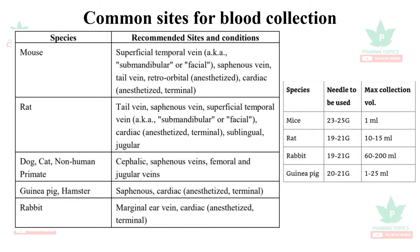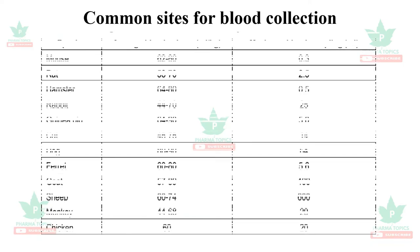You can see the needle size and maximum volume that can be collected by species. For mice, the bore size is 23 to 25 gauge and a maximum of 1 ml can be collected. For rats, 19 to 21 gauge and a maximum of 10 to 15 ml. For rabbits, 19 to 21 gauge and 60 to 200 ml. For guinea pigs, 20 to 21 gauge and 1 to 25 ml.